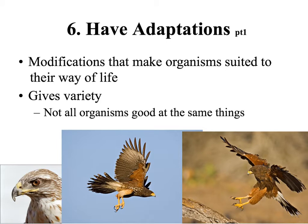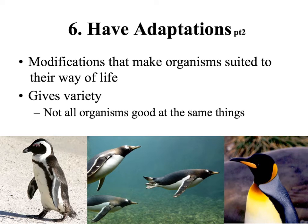The sixth characteristic all living organisms have are adaptations — modifications that make organisms suited to their way of life. These adaptations give variety to all organisms; not all organisms are good at the same thing. For example, a hawk is adapted to a carnivorous lifestyle with a sharp, powerful beak and talons meant to capture prey. They are swift flyers with keen eyesight. Penguins, on the other hand, are birds adapted for swimming — their wings are flipper-like, their body is torpedo-shaped to be hydrodynamic, and they're unable to fly. Their beaks are thick and stout because they eat fish. These adaptations are a result of thousands or hundreds of thousands of years of evolution.